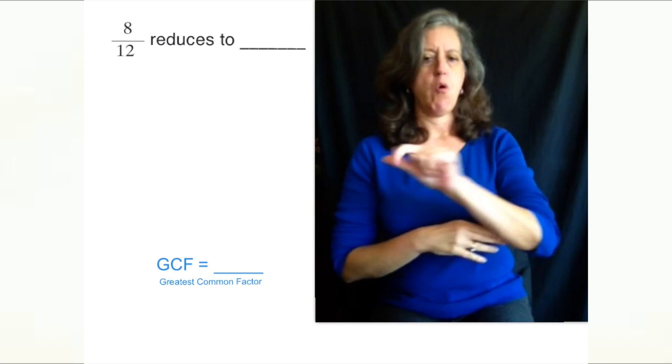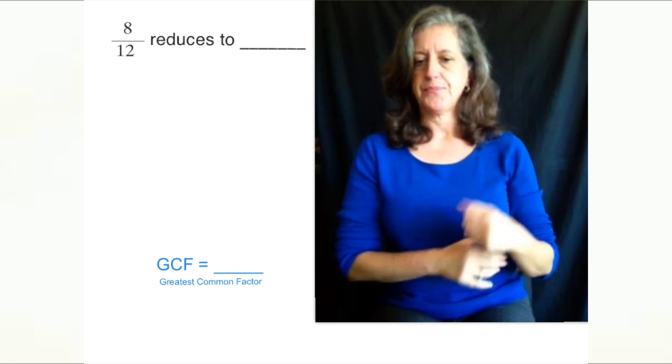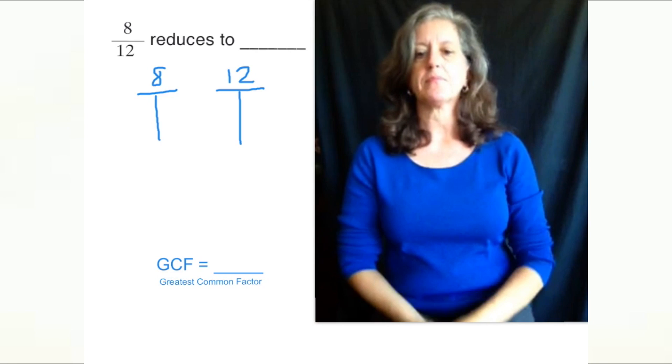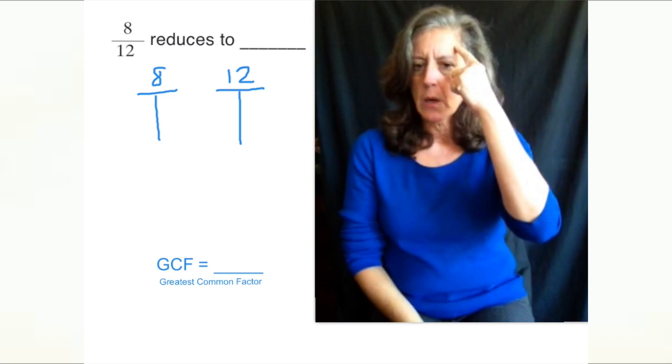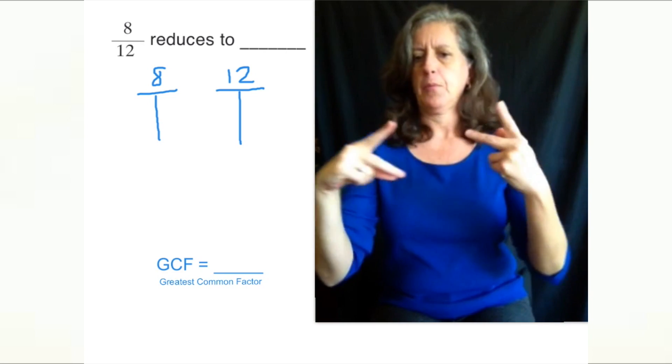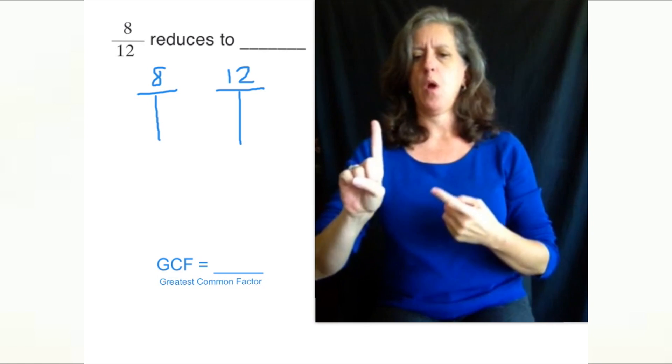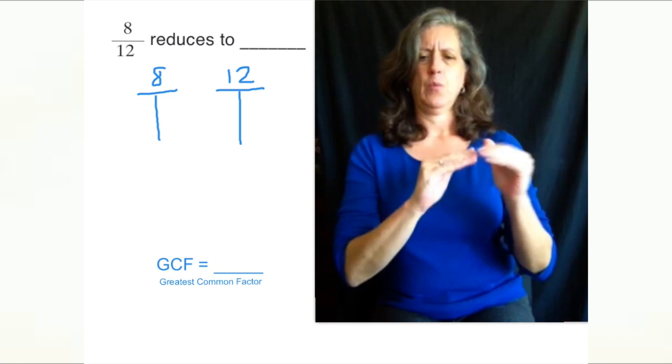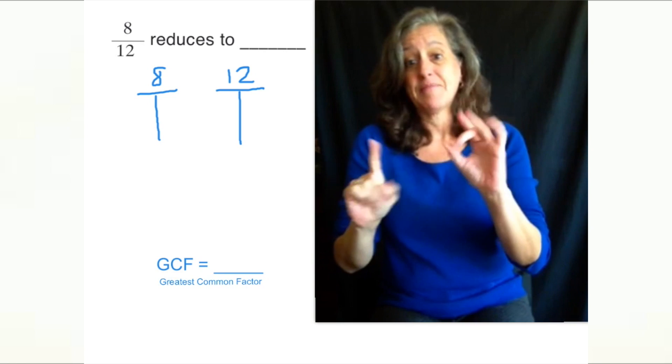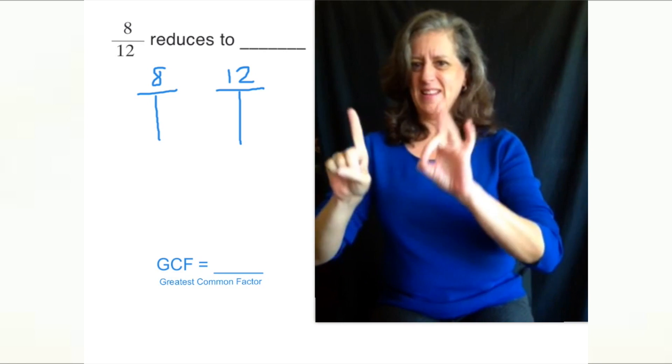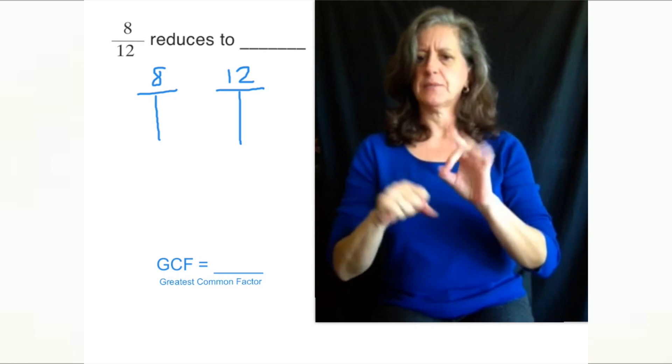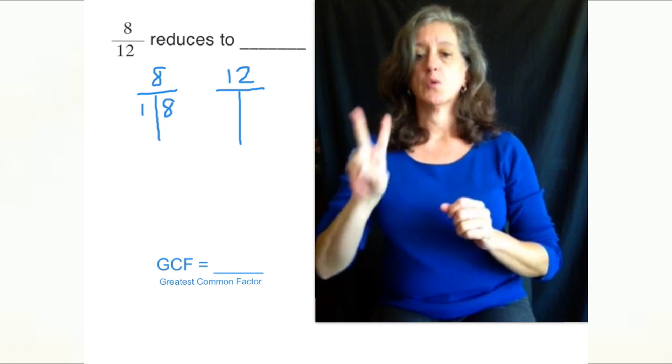You need to list all the factors of 8 and all the factors of 12. So you need to think what numbers, when multiplied together, have a total of 8. One times what is 8? One times 8 is 8. So you put down 1 and 8. One and 8 are factors of 8.